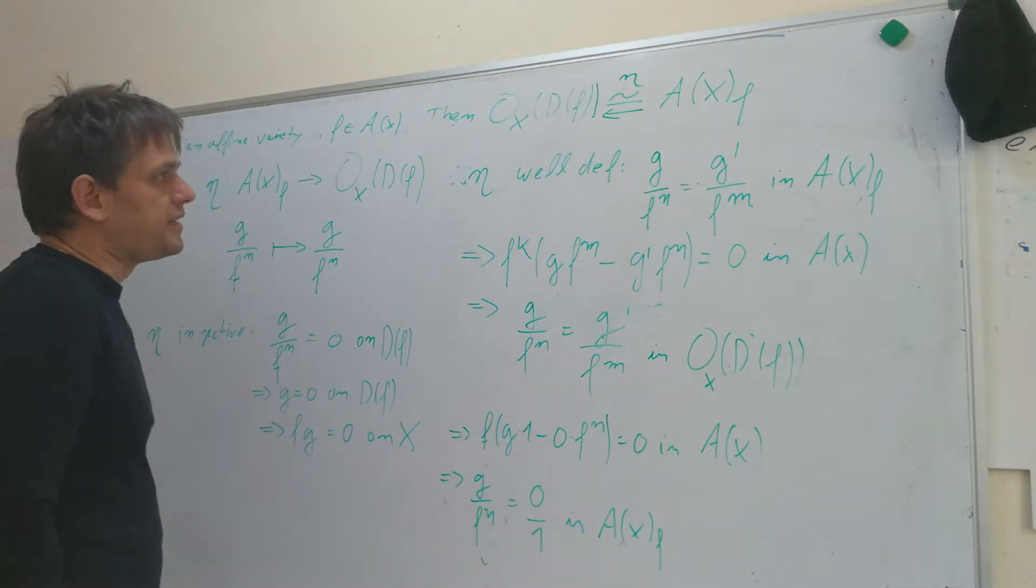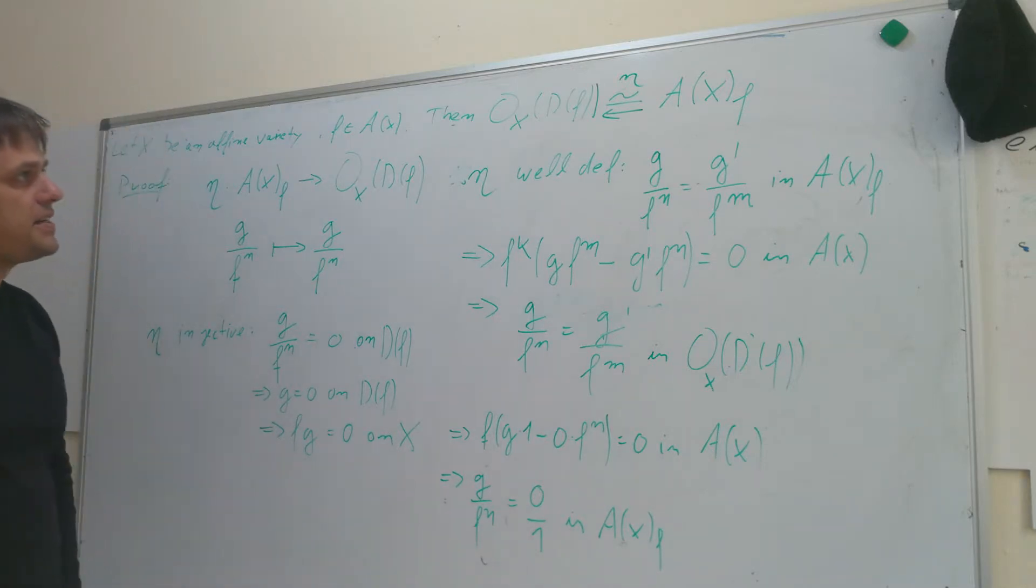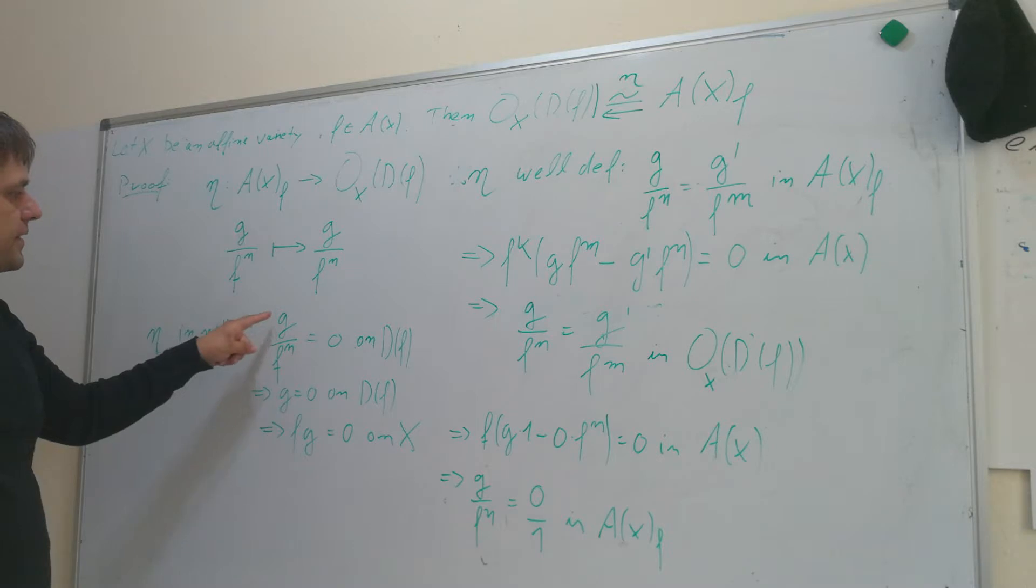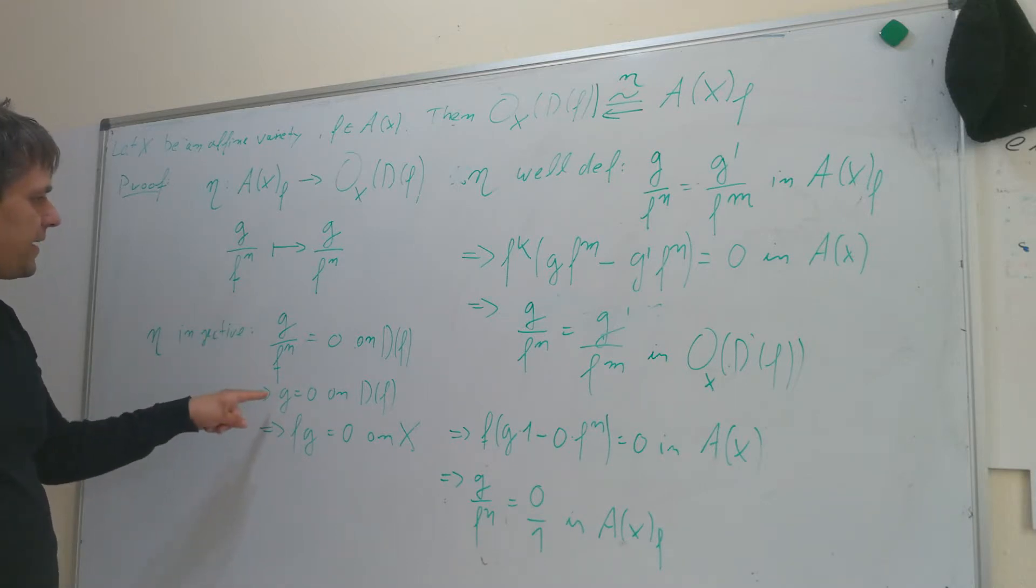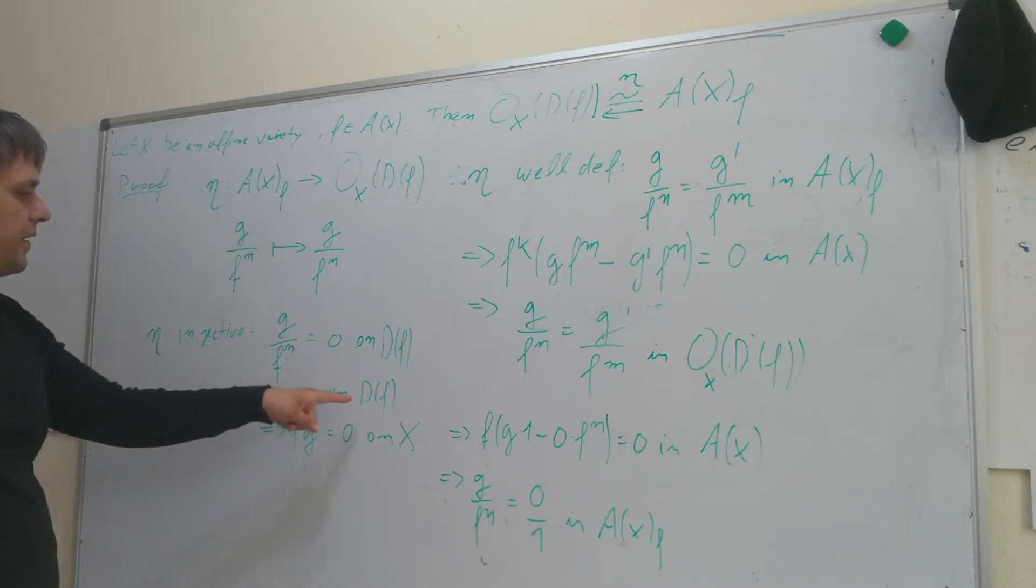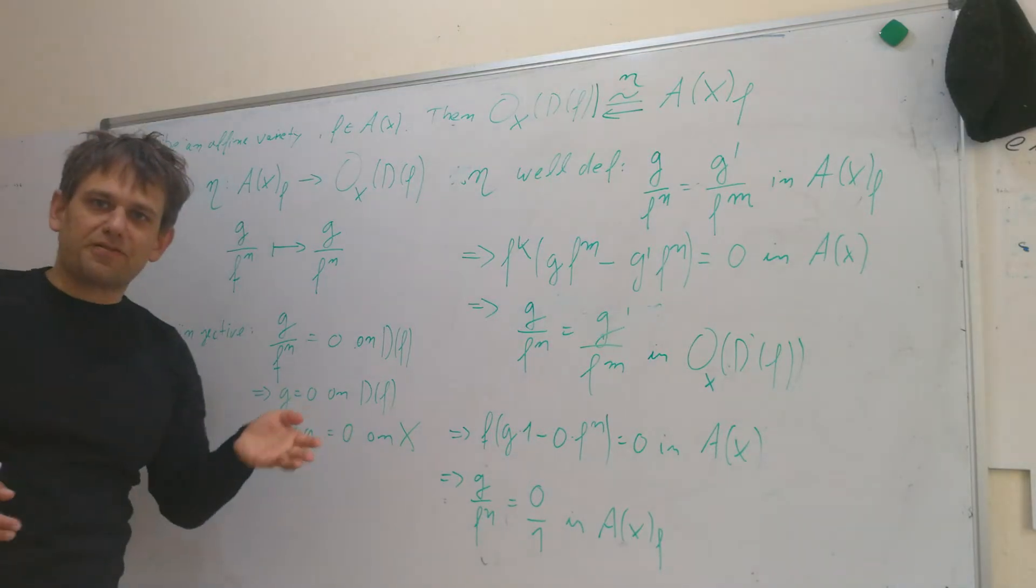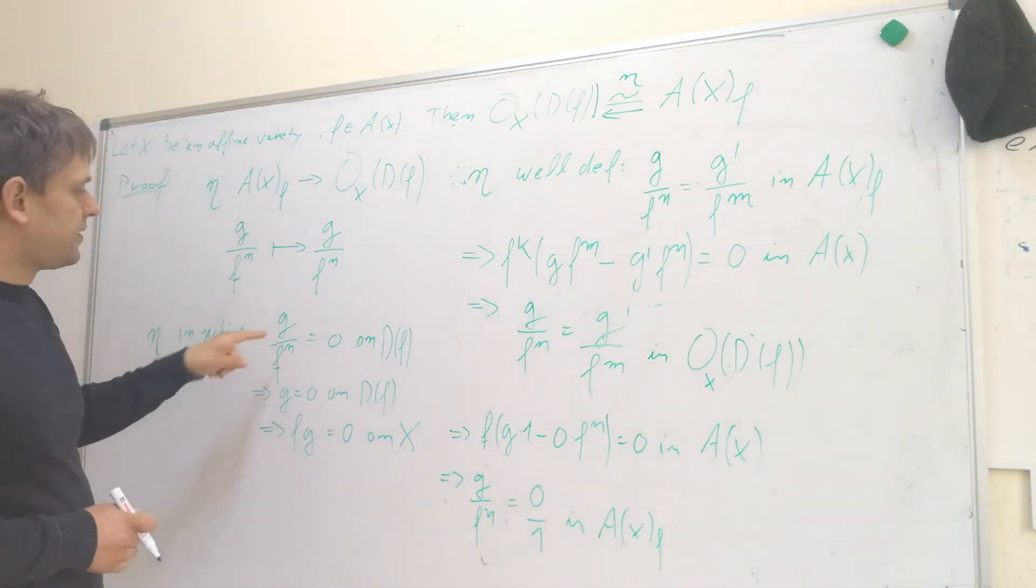But we also need to check that eta is injective. So, let's assume that g divided by f^n is equal to zero on df. Then, we must have that g is equal to zero on df because df is defined to be the set where f doesn't vanish.